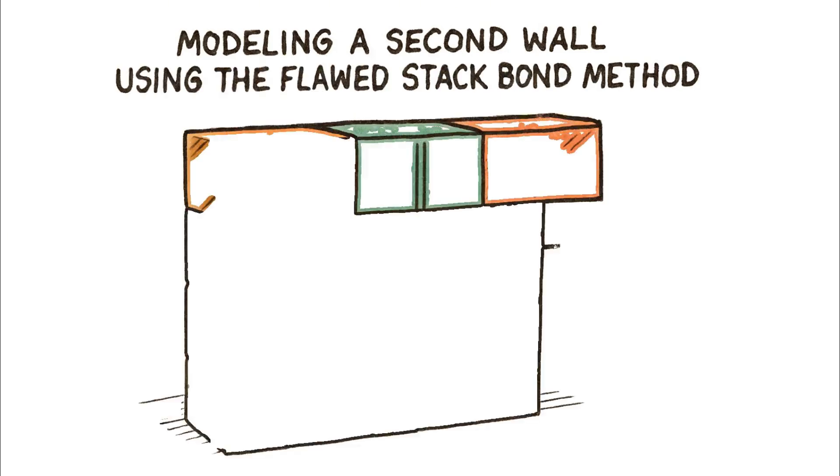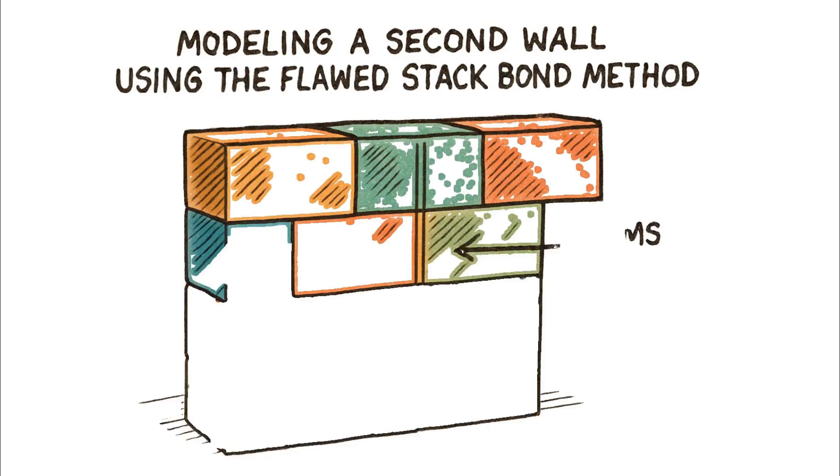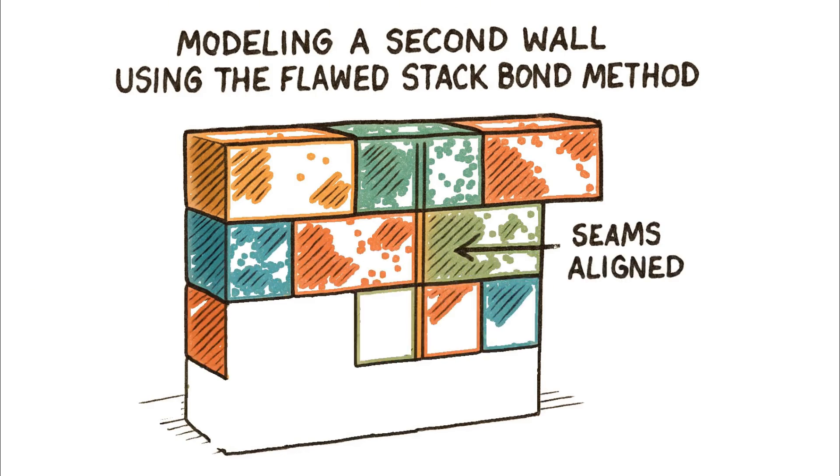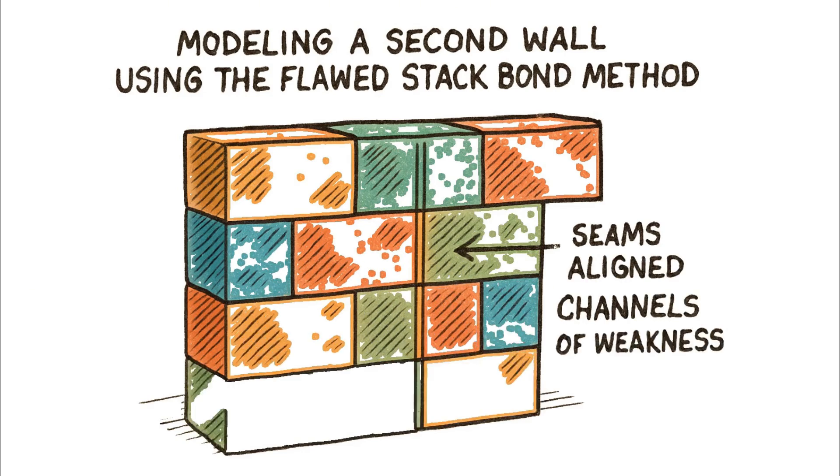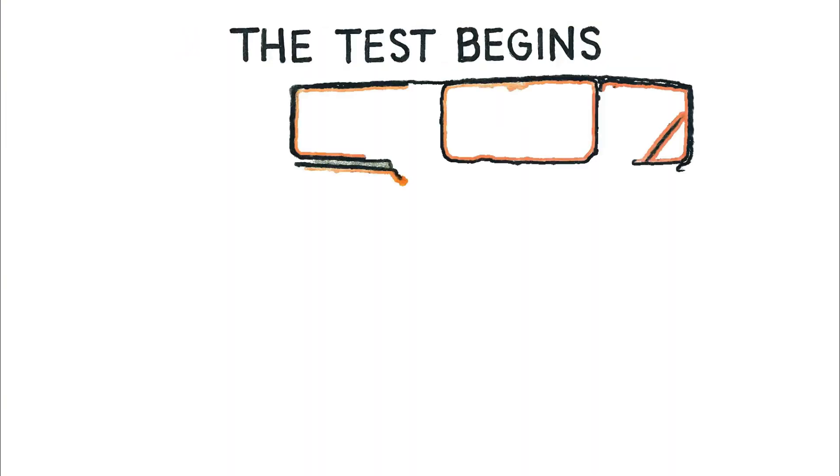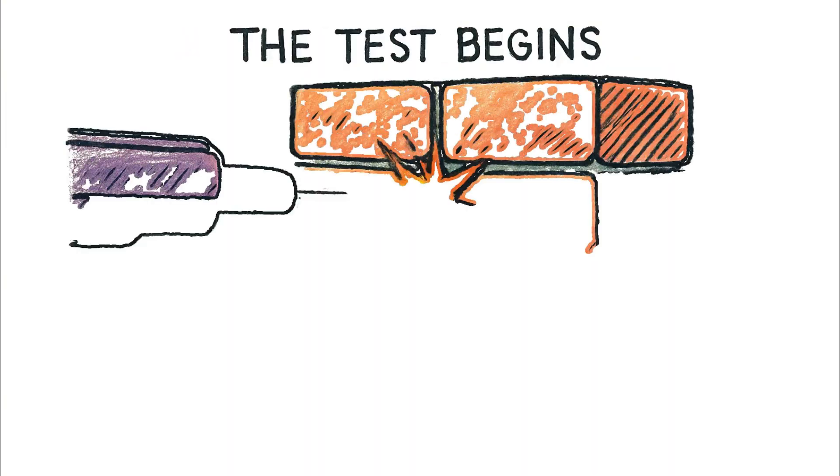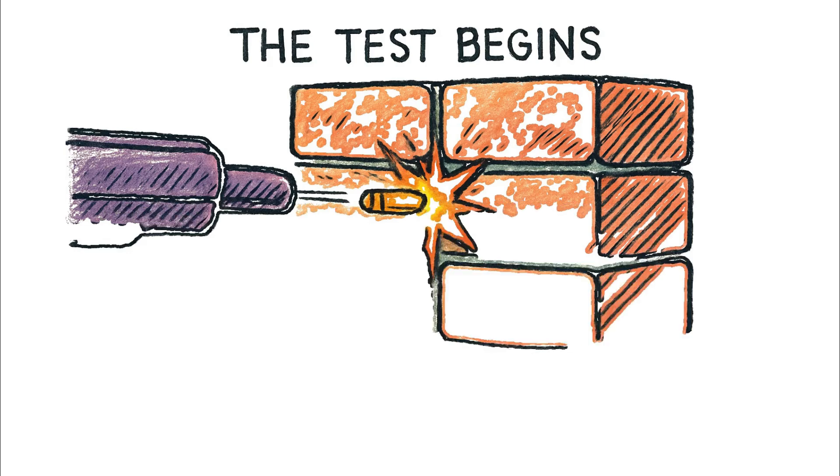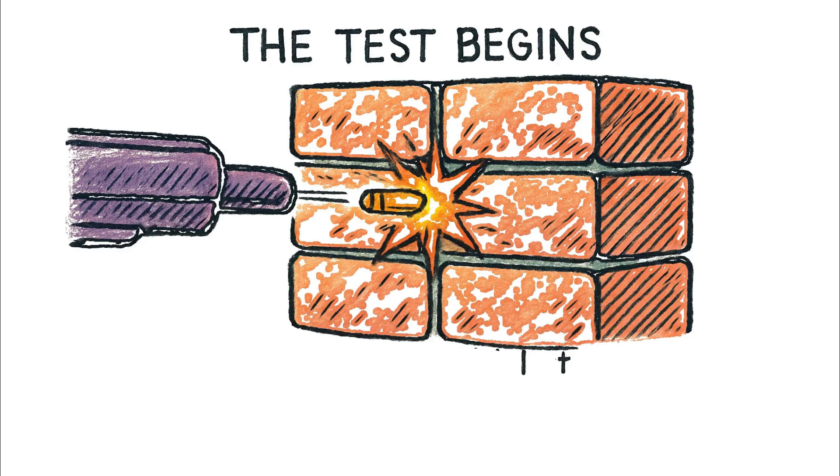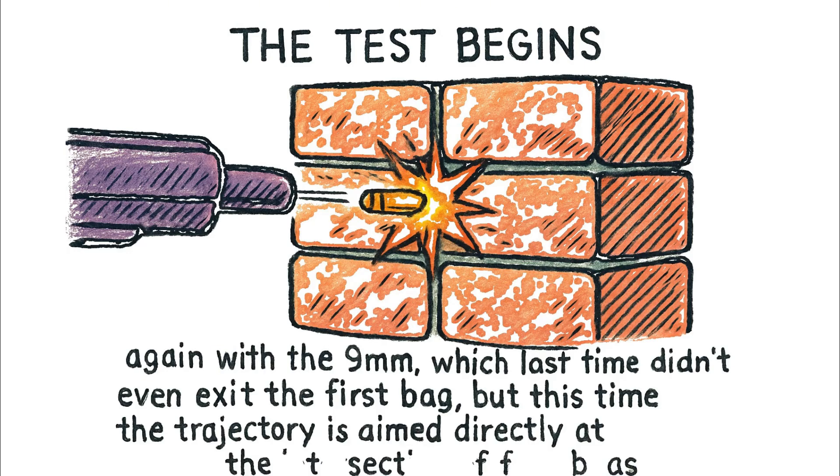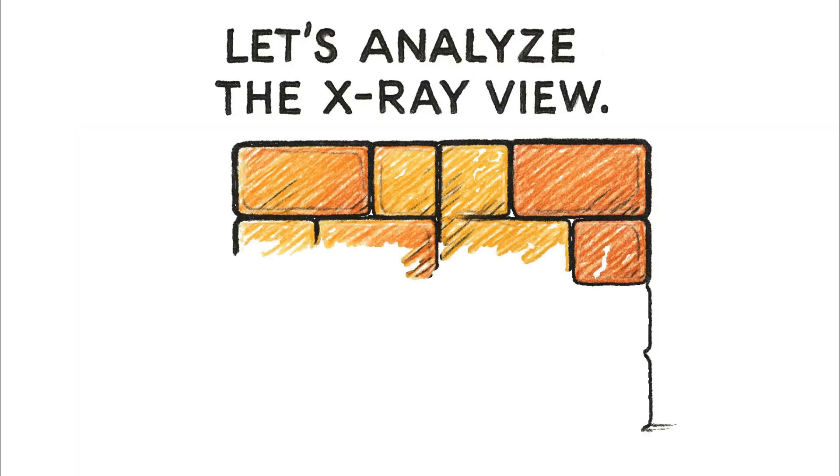Now let's put this concept to the test by modeling a second wall, this time constructed using the flawed stack bond method so that all the seams are aligned, creating those channels of weakness we discussed. The test begins again with the 9mm, which last time didn't even exit the first bag, but this time the trajectory is aimed directly at the intersection of four bags.